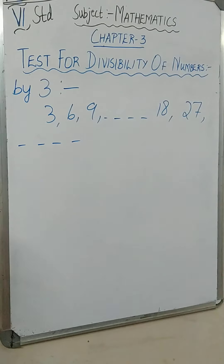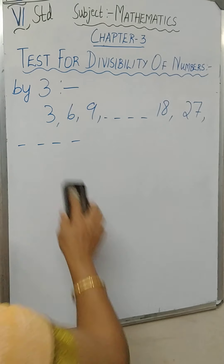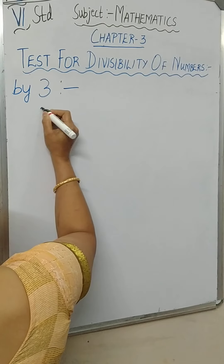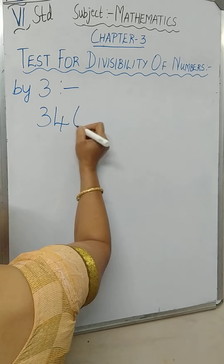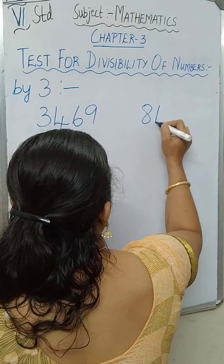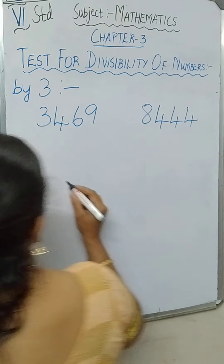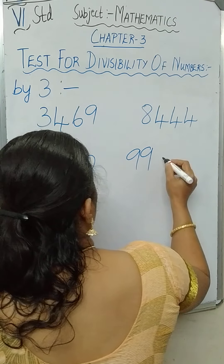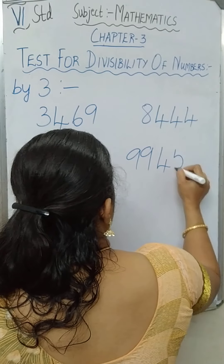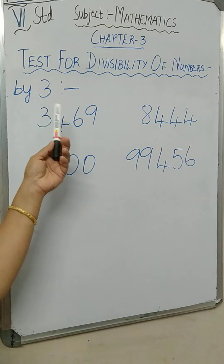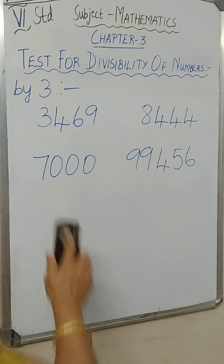You may know only till here, but what about beyond that? Suppose you have some numbers like 3,469 or 8,444 or 7,000 or 99,456. How will you know whether these numbers are divisible by 3? Let us see what the rule tells.